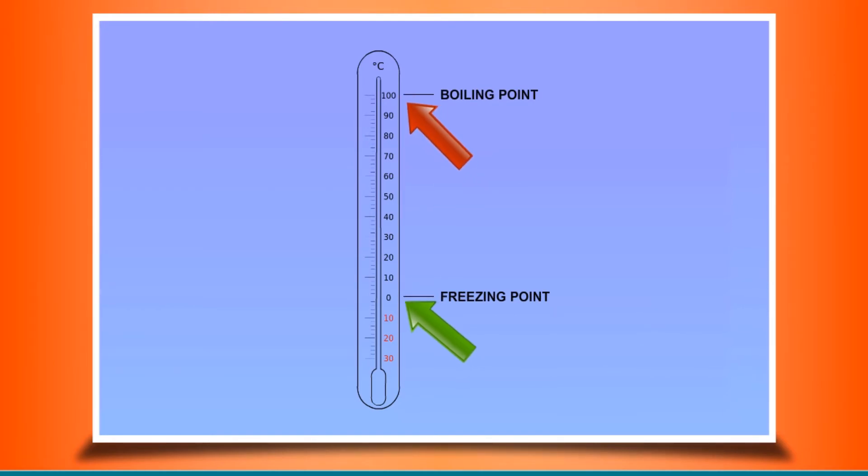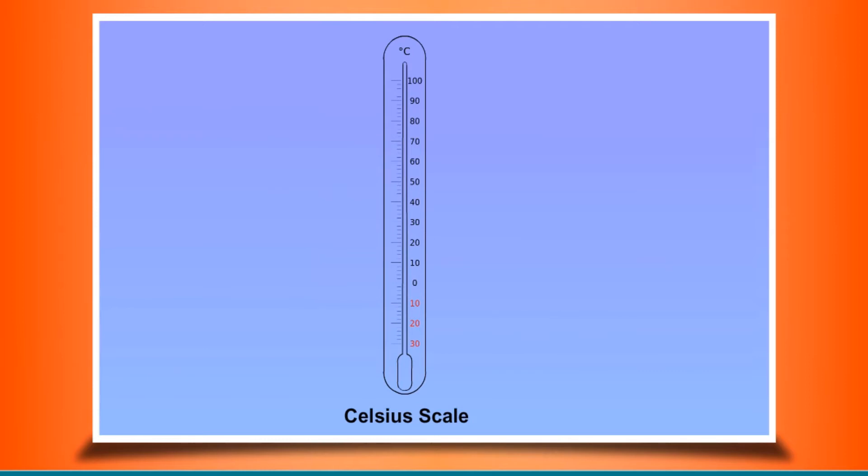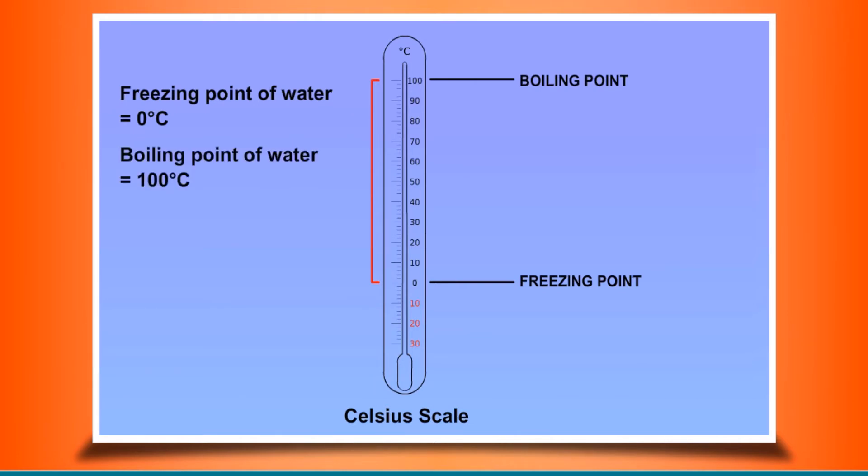Scientists have developed three scales of temperature: Celsius scale, Fahrenheit scale, and Kelvin scale. Celsius scale is the most commonly used scale of temperature. In this scale, the freezing point of water is taken as zero and boiling point of water as 100, and the in-between range is divided into 100 equal divisions or units. Each of these units is called a degree. The temperature in Celsius scale is denoted by degree C. Hence, freezing point of water is equal to zero degree C. Boiling point of water is equal to 100 degree Celsius.